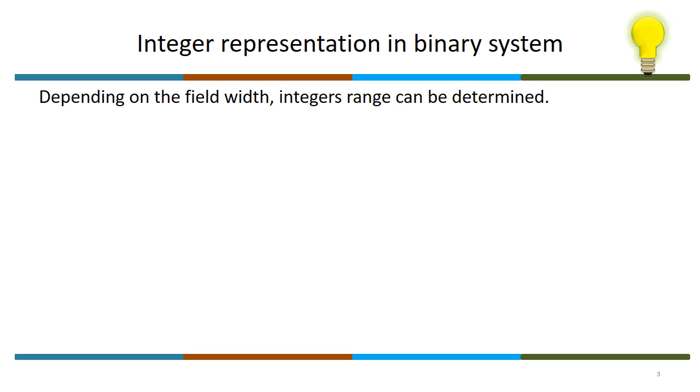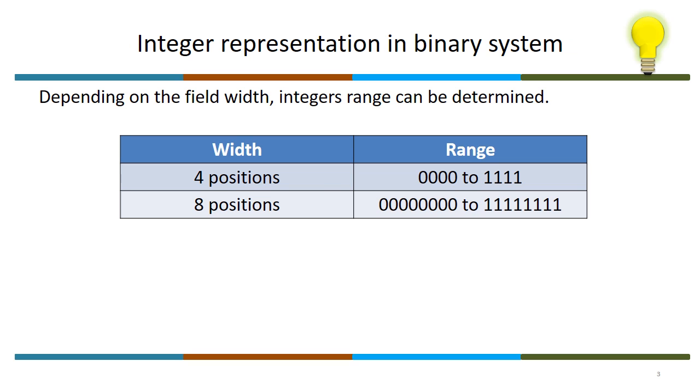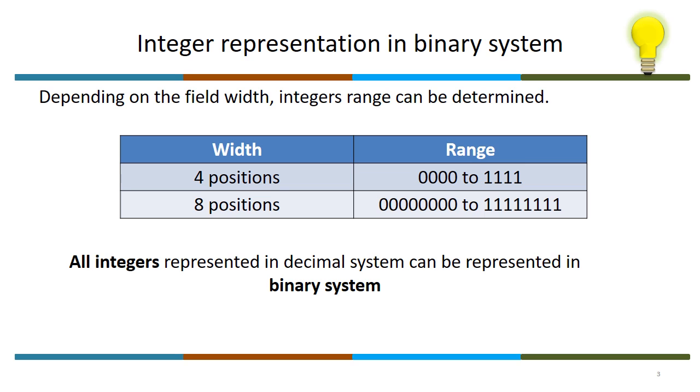The same thing applies with integer representation in binary systems. It depends on the field width: 4 bits gives one range, 8 bits gives a bigger range. One important thing to observe is all integers which can be represented in decimal system can be represented in binary system. There is a one-to-one match.